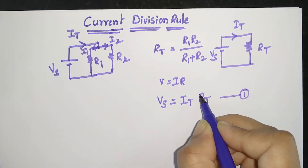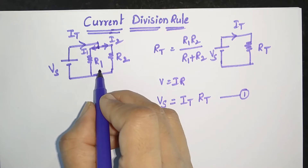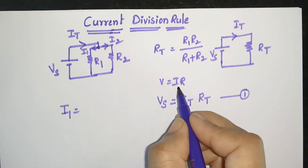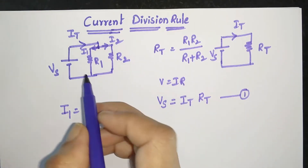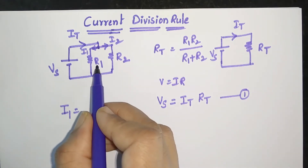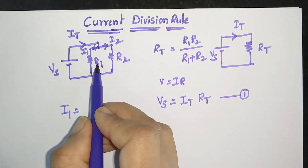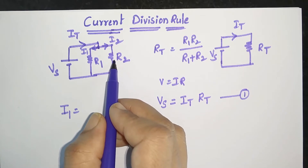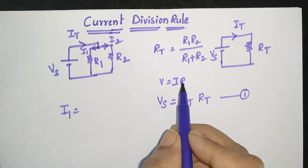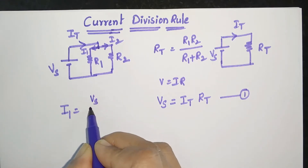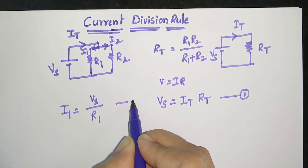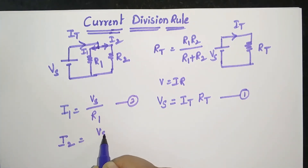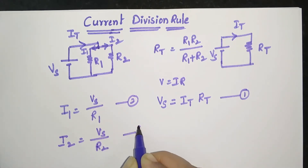Getting back to the original circuit, let us write the relation for I1. From Ohm's law, I = V/R. Since all branches are connected in parallel, the voltage is the same across all branches — Vs appears across R1 and also across R2. So I1 = Vs/R1 (equation 2). Similarly, I2 = Vs/R2 (equation 3).